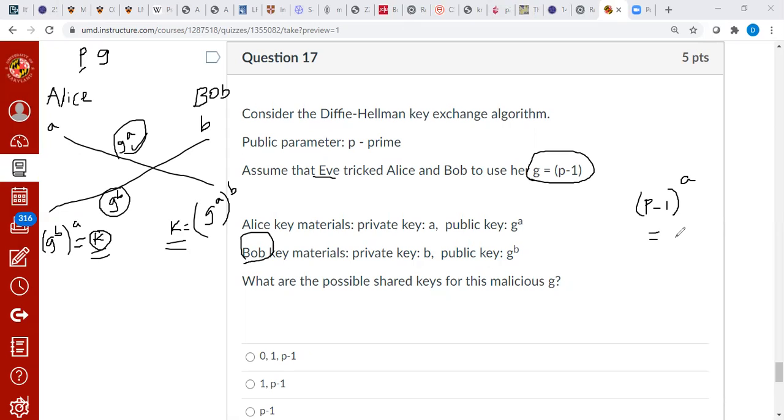So this is same as minus one power A. If A is even, the answer will be one. If A is odd, the answer will be minus one. Minus one is same as P minus one. So one if A is even is minus one if A is odd, but minus one means P minus one in modular arithmetic. So we can say the values are one or minus one.